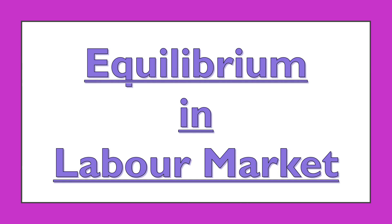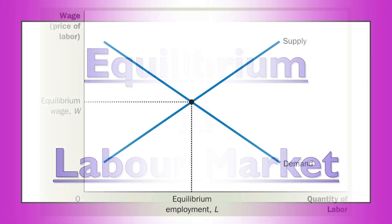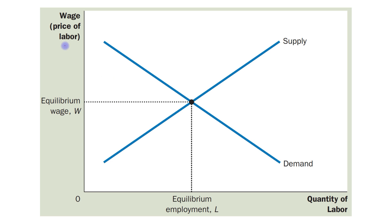Today's topic is equilibrium in the labor market. On the vertical axis we have taken wage, that is the price of labor. On the horizontal axis we have taken quantity of labor. This is the demand curve for labor and this is the supply curve of labor. The intersection point is the equilibrium point, at which the demand for labor is equal to the supply of labor. The wage determined at this point is the equilibrium wage, and this is the equilibrium quantity of labor, which is equilibrium employment.